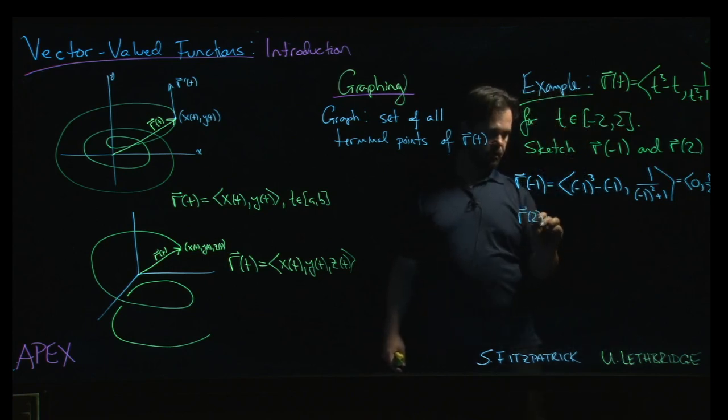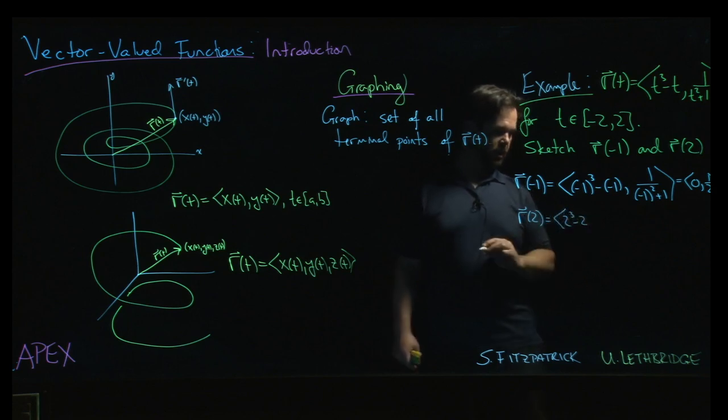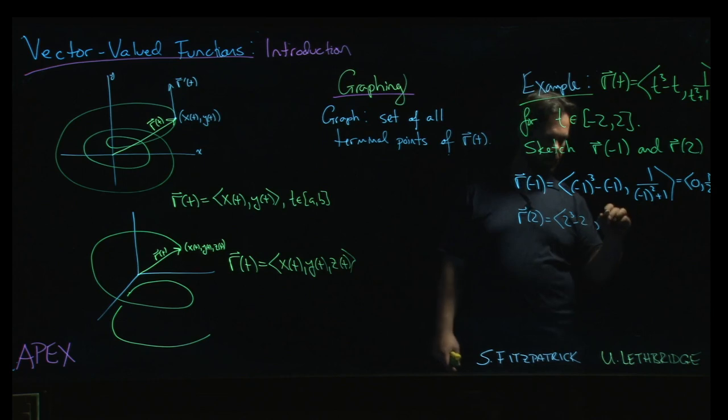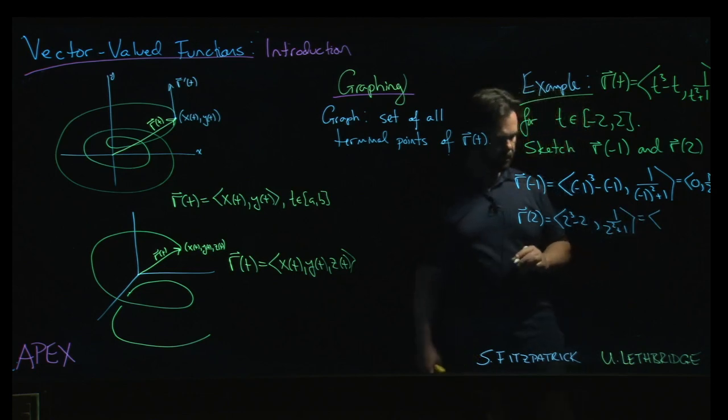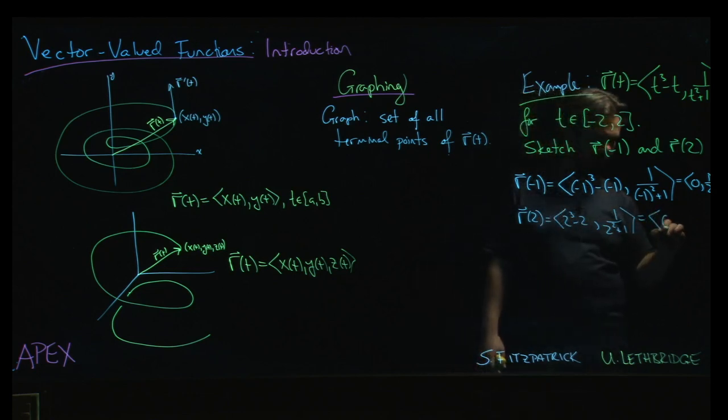r at 2, we're going to get 2 cubed minus 2, and then 1 over 2 squared plus 1. So that is going to be 8 minus 2 is 6, and then 1 over 5.